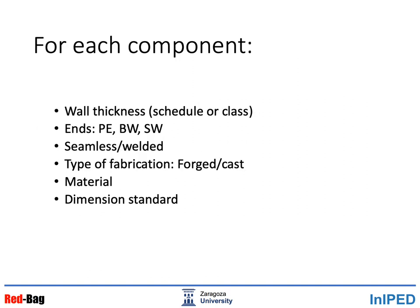For each component, the pipe class tells you the wall thickness — either with the schedule or the class — the rating, the kind of ends such as plain end, pad weld, or socket weld, the kind of welding if any (seamless or welded), the type of fabrication (forged or cast), the material used, and the dimension standard.